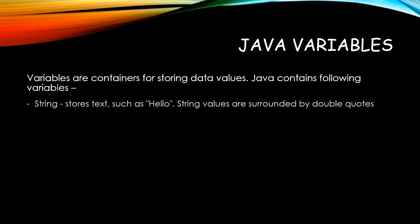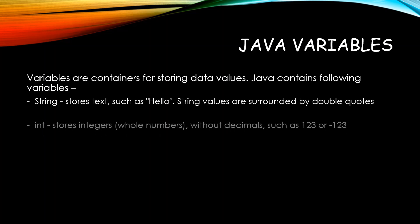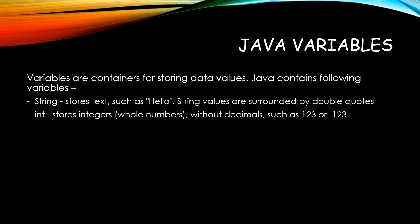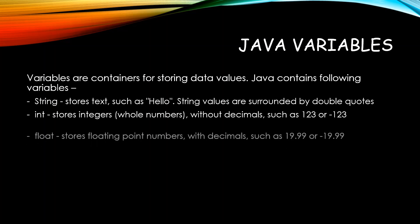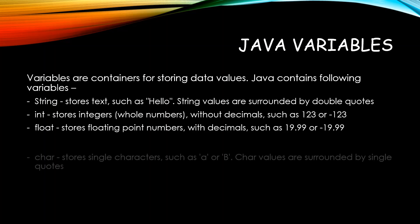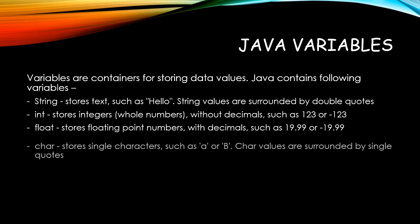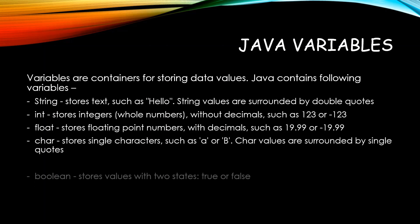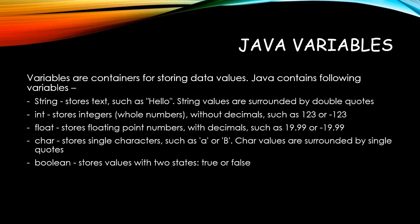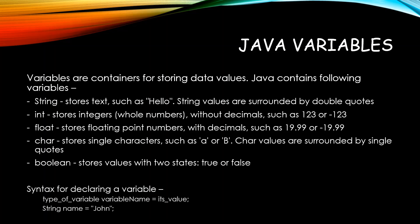Java variables: variables are containers for storing data values. Java contains the following variable types — String, Integer, etc. These are the data types in Java and we can have corresponding variables for them. As you can see in the example at the bottom right, we define the type of the variable, then the variable name, then equals to, and then the value corresponding to that variable.